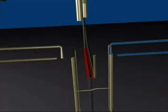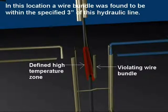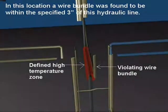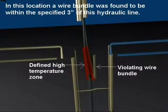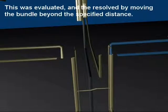Because eWistrat contains wire specification information, it is able to perform analyses not possible with other analysis programs. In this case, while other wires in this area are designated for high temperature areas, the wires in this bundle are not. eWistrat reported that this wire bundle was found within 3 inches of a high temperature line. This was evaluated and resolved by moving the bundle beyond the specified distance.